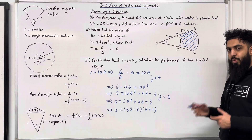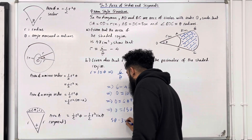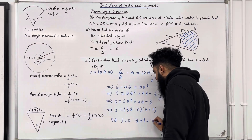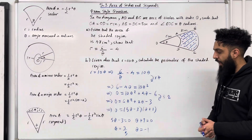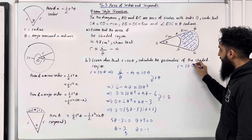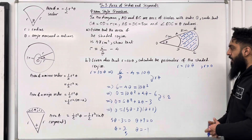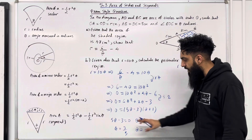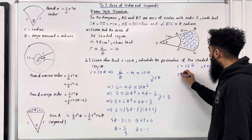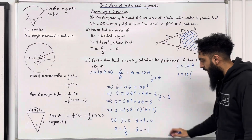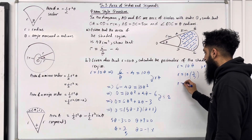Setting each bracket equal to zero gives theta equals 3 over 5 or theta equals minus 1. Since the radius R equals 10 theta must be positive, we take the positive solution theta equals 3 over 5 and reject theta equals minus 1. Therefore R equals 10 times 3 over 5, which gives R equals 6.